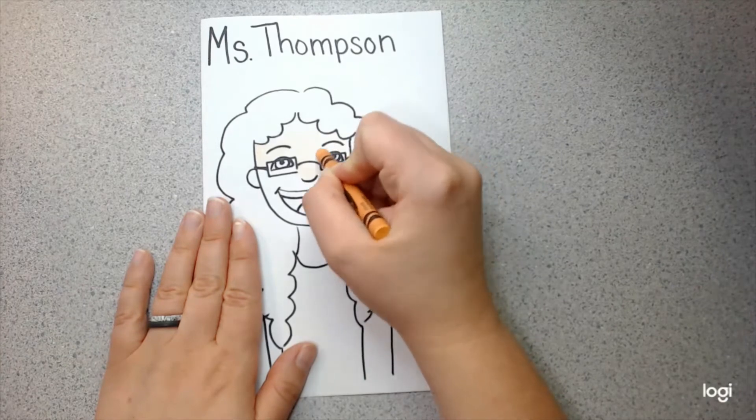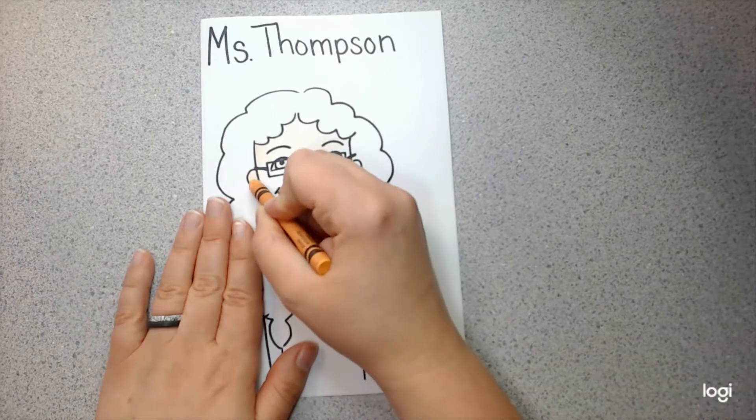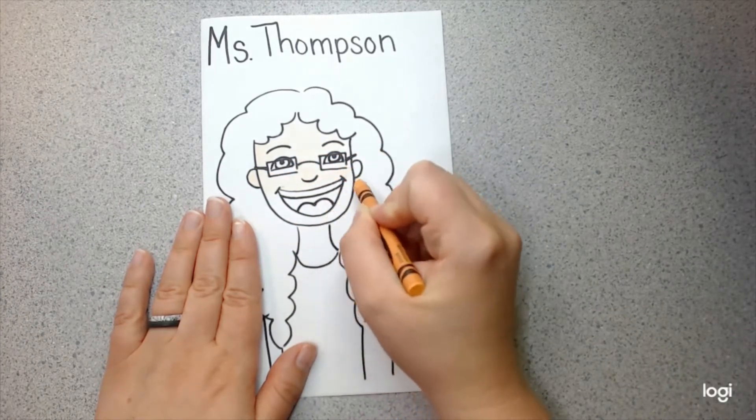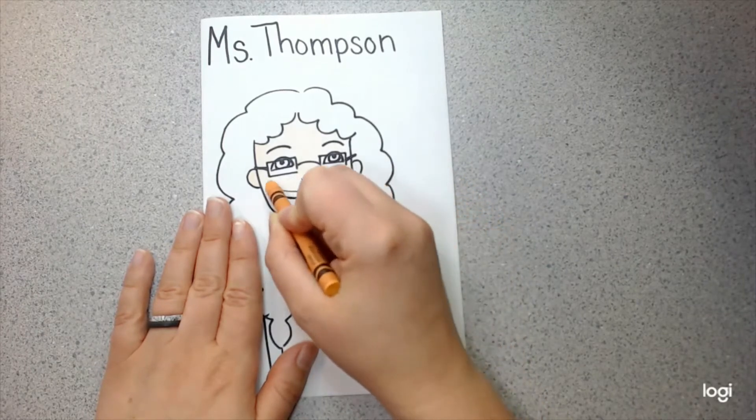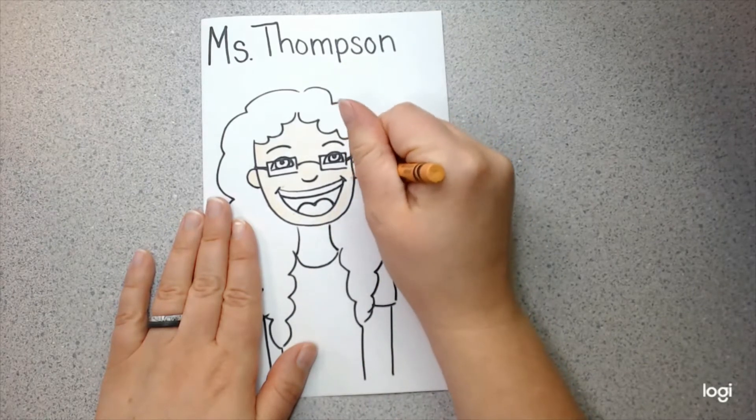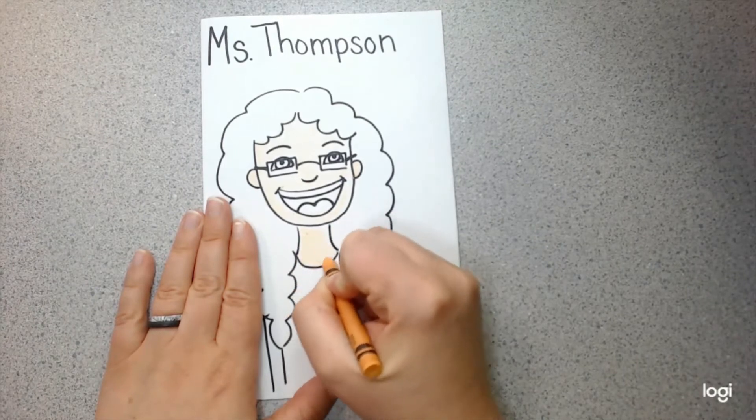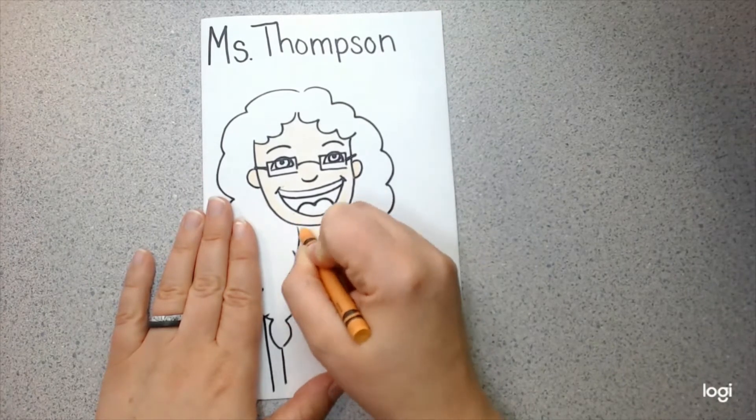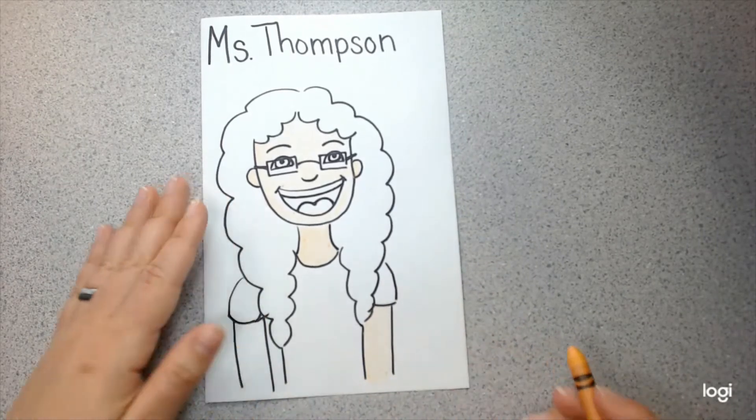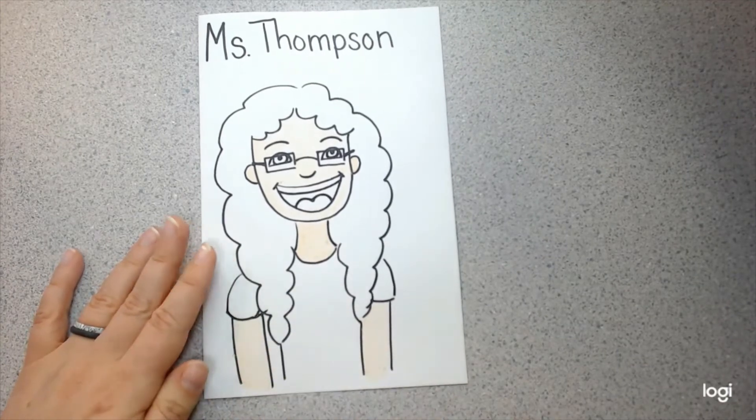We also want to make sure we try to color inside the lines. This self-portrait is a good way to practice that. I'm trying to be careful and go all the way to the edge of my lines so I don't leave any white space. There we go.